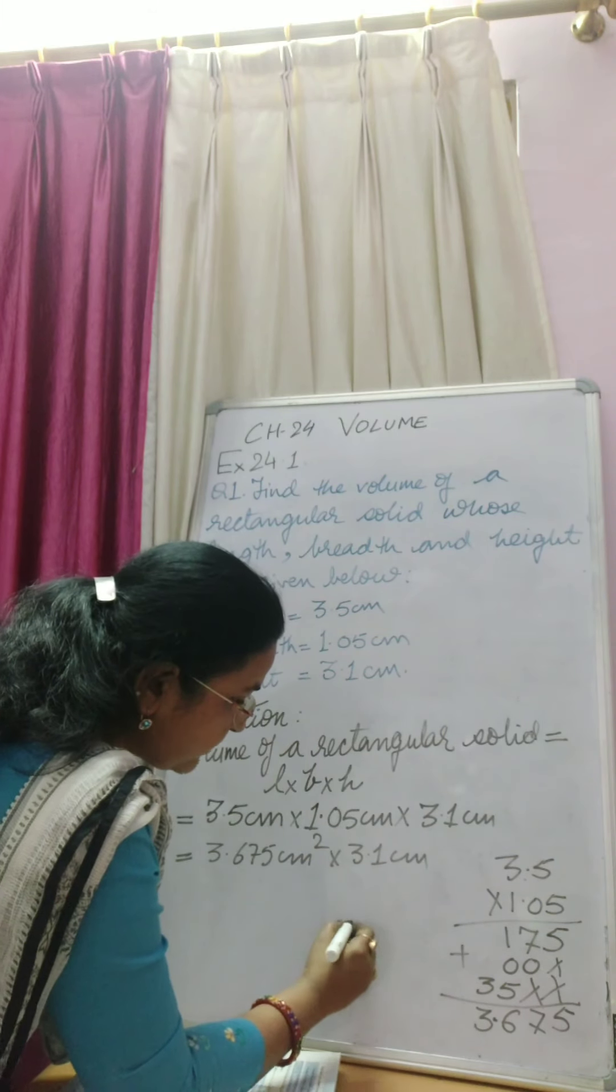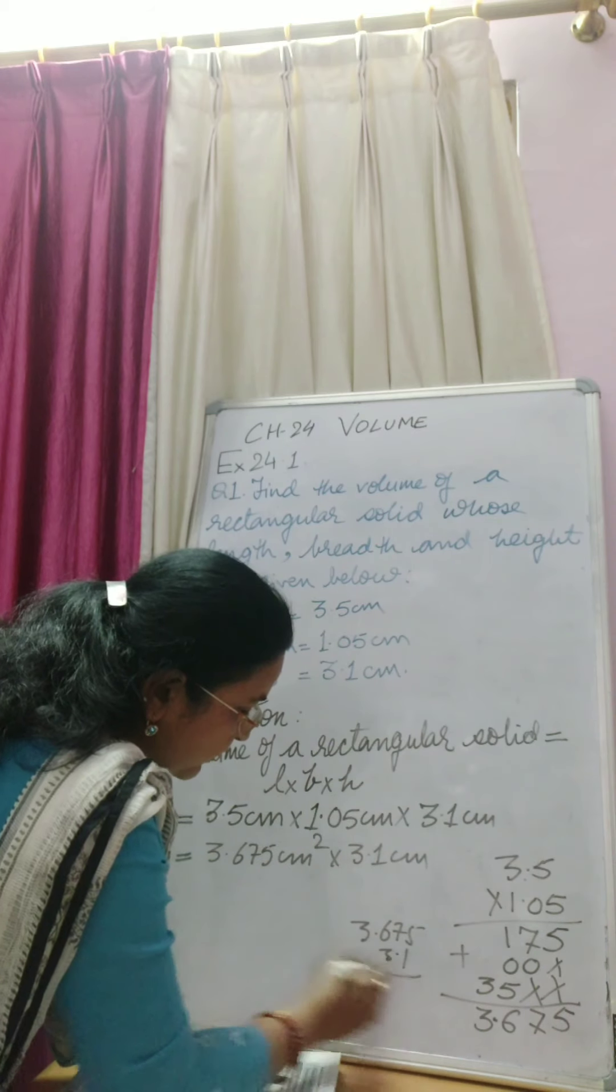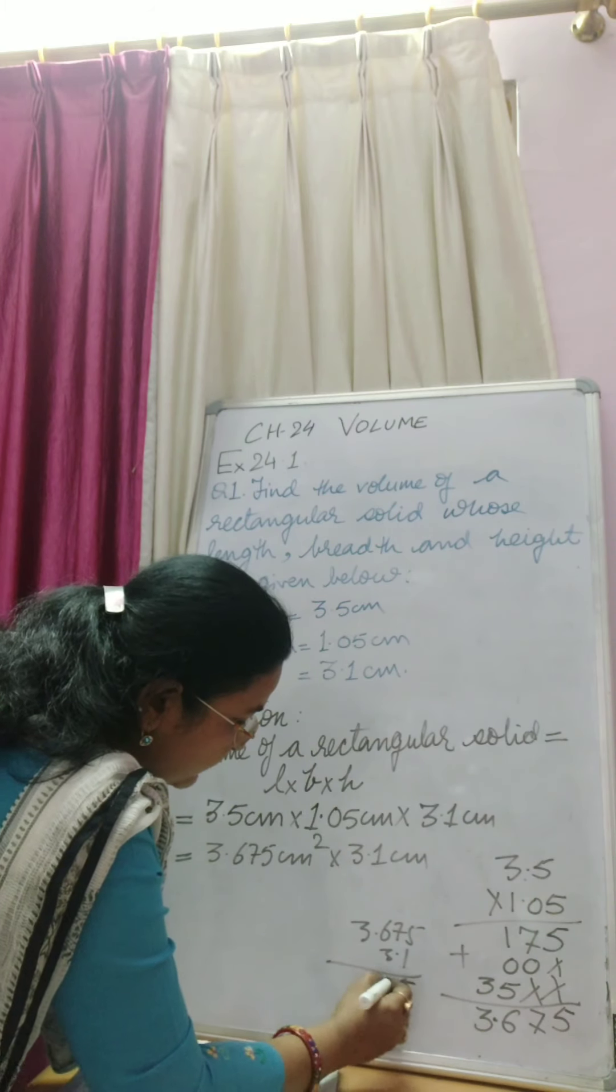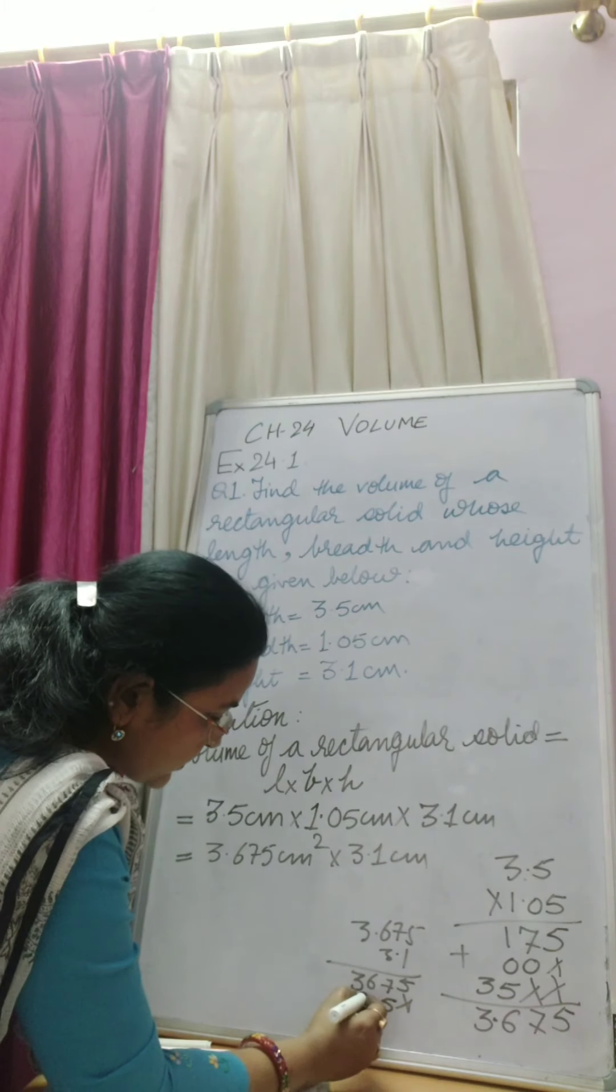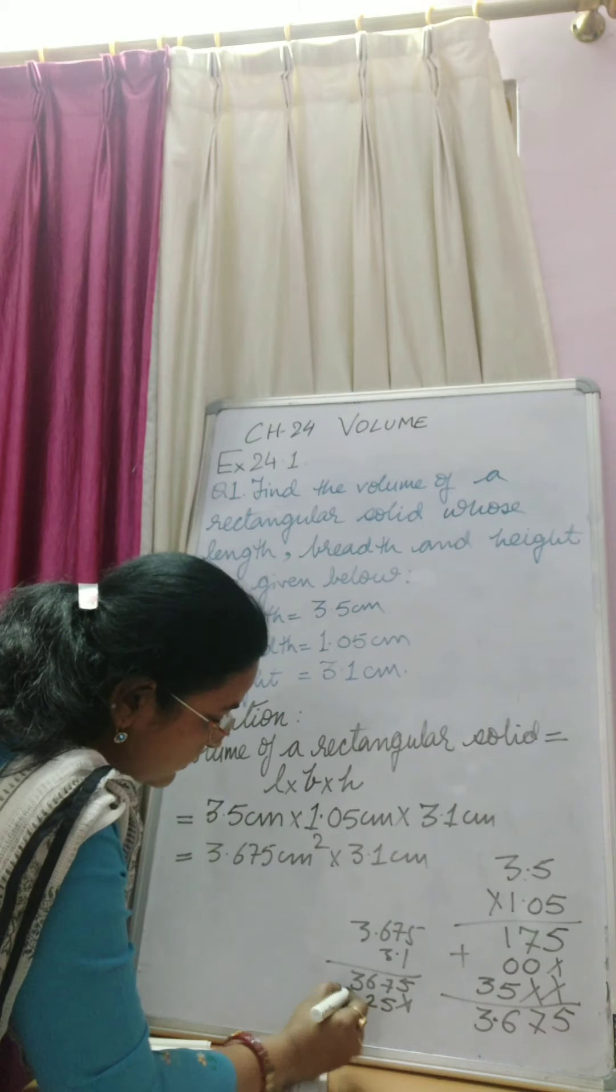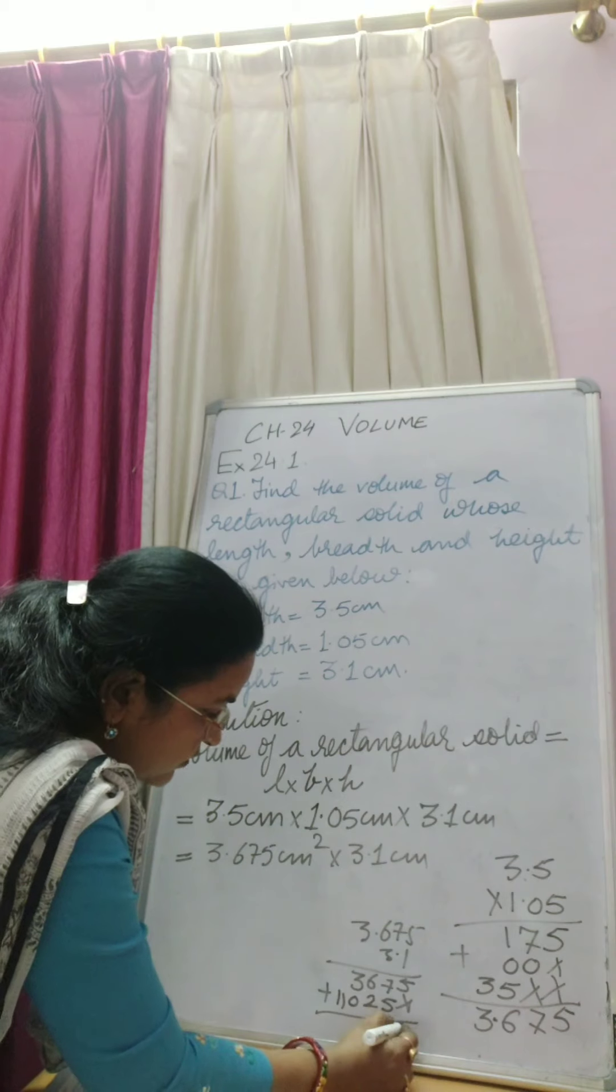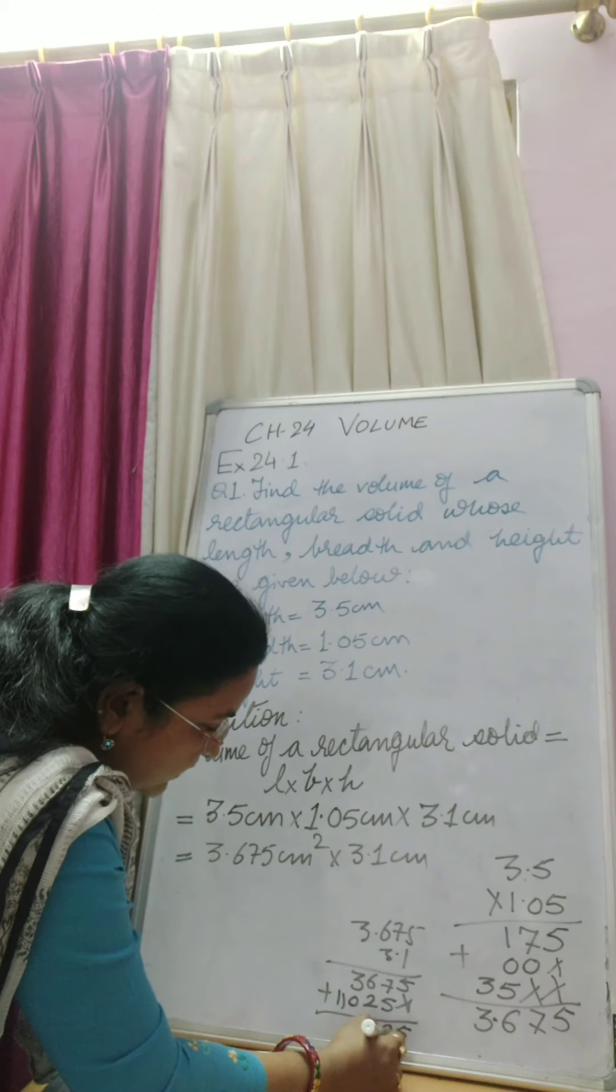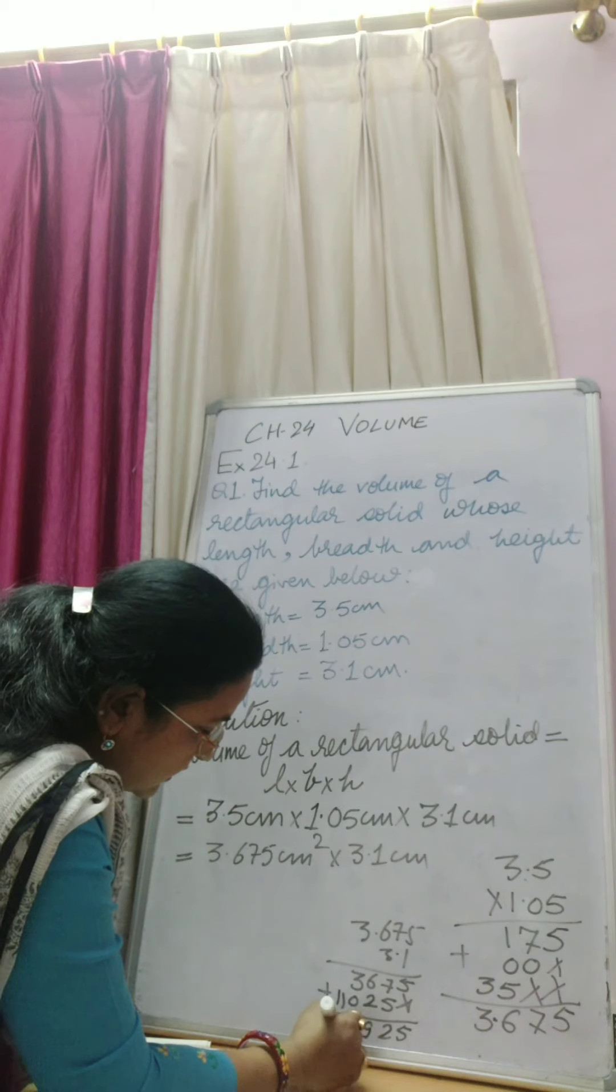Now we will multiply 3.675 with 3.1. So 3 fives are 15. 3 sevens are 21 plus 1, 22. 3 sixes are 18 plus 2, 20. 3 threes are 9 plus 2, 11. Now this is 5, 7, 5, 5, 12, 6, 2, 8, 1, 9, 3, 11.